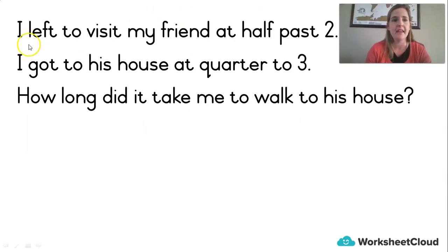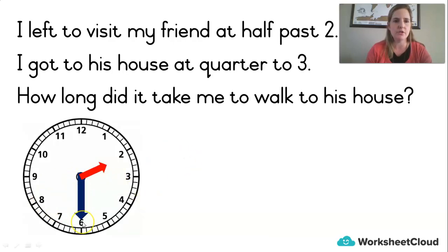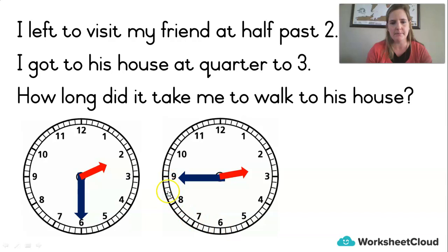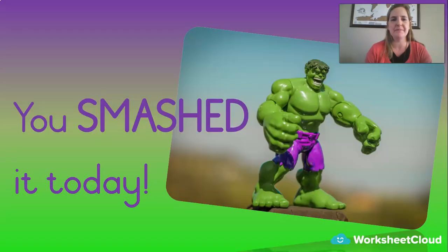Let's try another one. I left to visit my friend at half past 2, walking to my friend's house, and I got to his house at quarter to 3. How long did it take me to walk to his house? Let's draw a quick picture of a clock. I leave at half past 2 and get there at quarter to 3. The hour hand was just past the 2 and now it's almost at the 3 — a whole hour hasn't gone by, just some minutes. The minute hand was at half past and it's moved to quarter to. So how many minutes passed? 5, 10, 15. How long did it take me to walk to his house? 15 minutes. Very good — you smashed it!